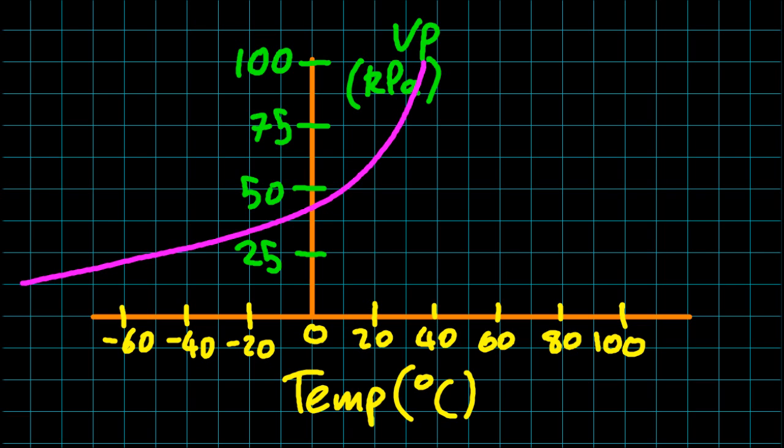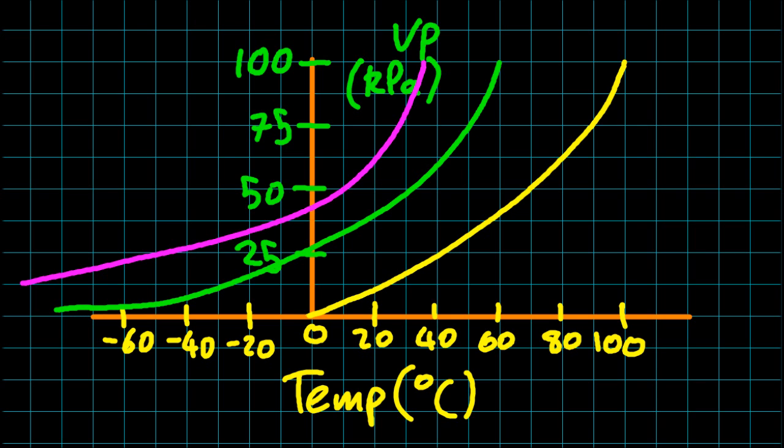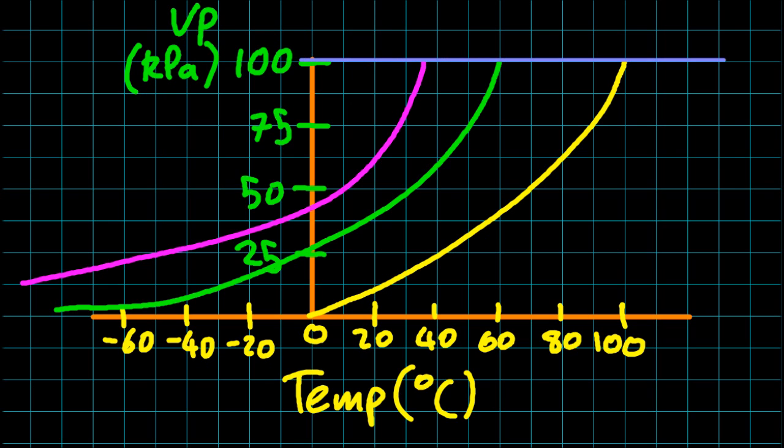And if you remember, when the vapor pressure of the chemical equals atmospheric pressure, it will boil. Normally the IB puts three lines on these sort of graphs, and I've drawn in a blue line there to show atmospheric pressure.